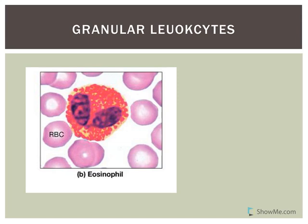Since eosinophils are phagocytic, they like to eat substances coated with antibodies. Antibodies are released by our immune cells — specifically B lymphocytes involved in antibody production, which are part of our specific defense system. When antibodies surround or coat an abnormal cell, it makes it much more appetizing for phagocytes to engulf — so eosinophils definitely prefer things coated with antibodies.